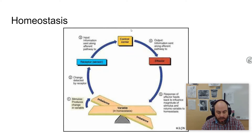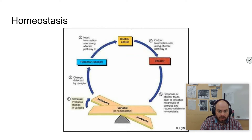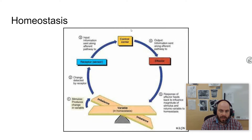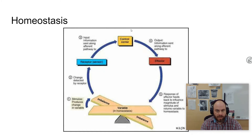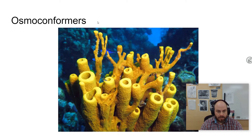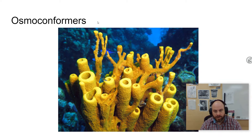The first thing we're going to look at is osmoregulation, which is the balance of the internal concentration of water in your body versus the concentration of water on the outside. It could be that there's no concentration of water on the outside, like terrestrial animals, and so they have to figure out how to keep water in their bodies. Also with fish, they have to figure out how to make sure they don't become like the water around them, unless you're an osmoconformer. An osmoconformer is an organism that is at equilibrium with their external environment.